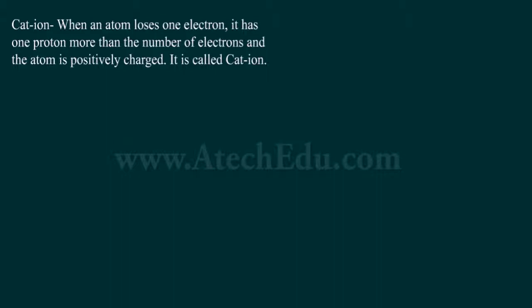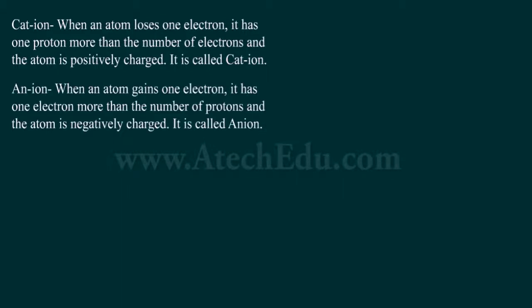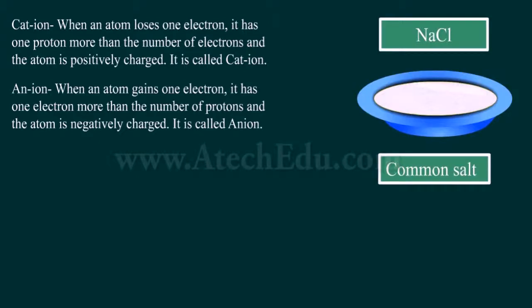When an atom loses one electron, it has one more proton than electrons and becomes positively charged — this is called a cation. When an atom gains one electron, it has one more electron than protons and becomes negatively charged — this is called an anion. In sodium chloride, sodium is the cation and chlorine is the anion, and these ions combine to form a molecule of sodium chloride.